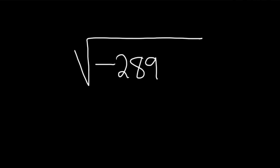In this problem, we have to simplify the square root of negative 289. So the first step in a problem like this is to deal with this negative that you see in the square root here.